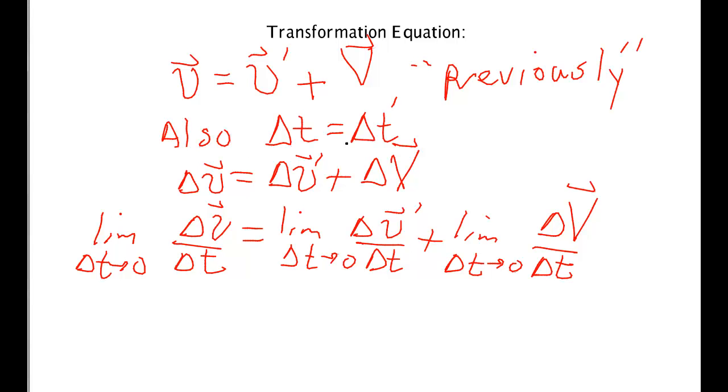Now because of our statement that both observers measure the same time, I can go back, although I've done this, just divided both sides by the same delta T and take the same limit, I can change this term to where that's delta T prime, right there and right there.